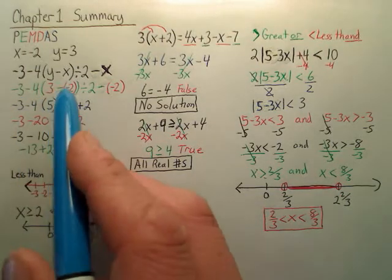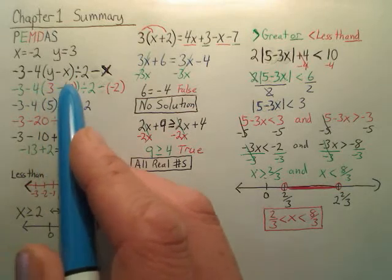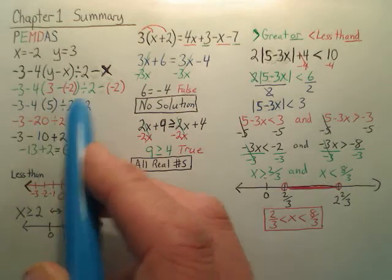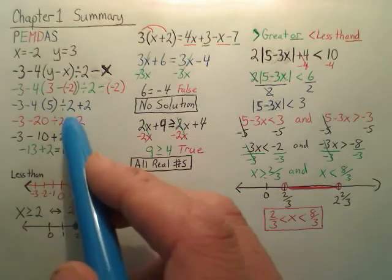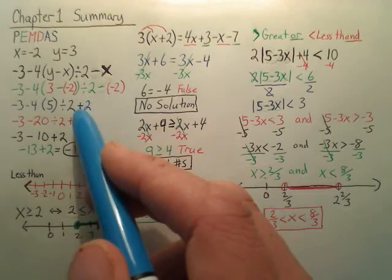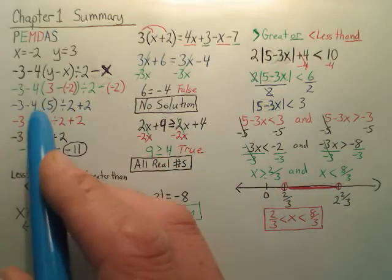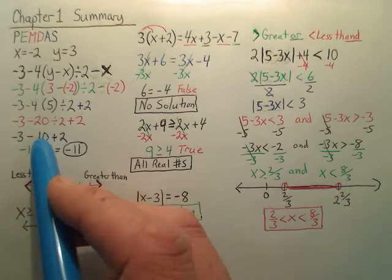With order of operations, you do everything inside the parenthesis. And a negative negative is a positive, so that would be 3 plus 2. Then, do you understand this negative negative is actually a plus 2? Then I do multiply, divide left to right, so I do this and get 20. I do this and get 10, or negative 10.